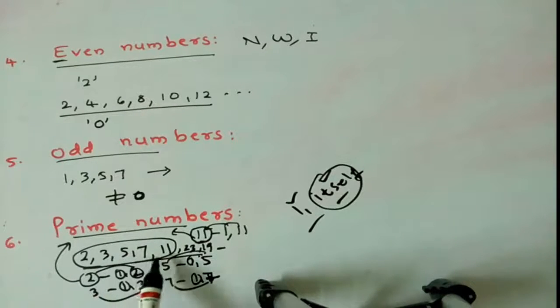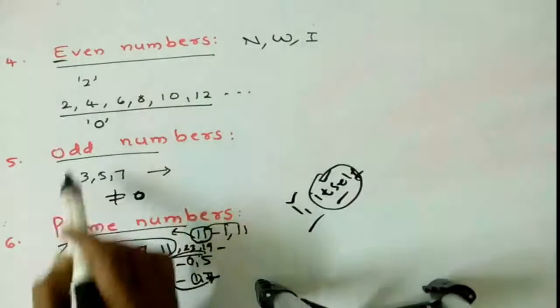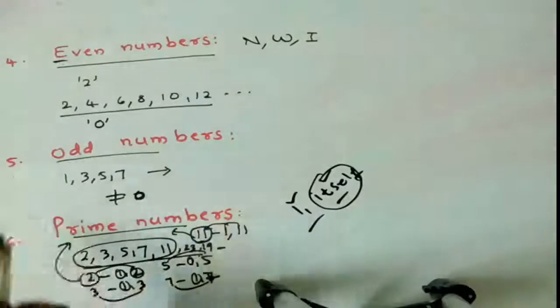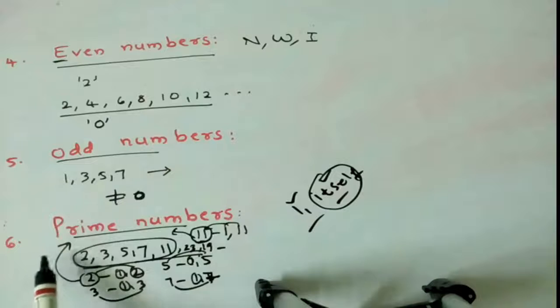We think you understand well. So today, our topic is types of numbers. Last class, I already explained. Today, I explained only even numbers, odd numbers, prime numbers. These three types of numbers I explained in this video.